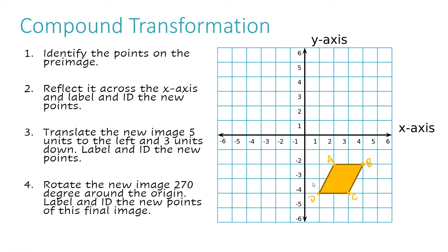Step two wants us to reflect it across the x-axis and label and identify the new points. If I reflect this across the x-axis, it's going to go up and look reversed. My A is two spaces away from the x-axis, so it's going to be two spaces away in the opposite direction — this will be A prime. B is also two spaces away, so it's going to be two spaces up. This will be B prime.